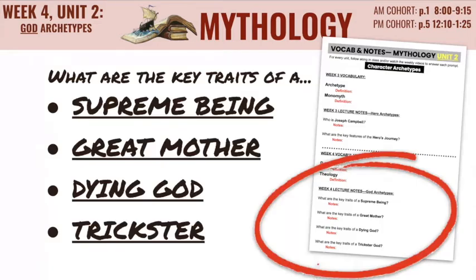Now let's move into our lecture notes. For this one, we're looking at four different kinds of gods: the Supreme Being, the Great Mother, the Dying God, and the Trickster. As you listen, just take note of the key traits of each of these kinds of gods.